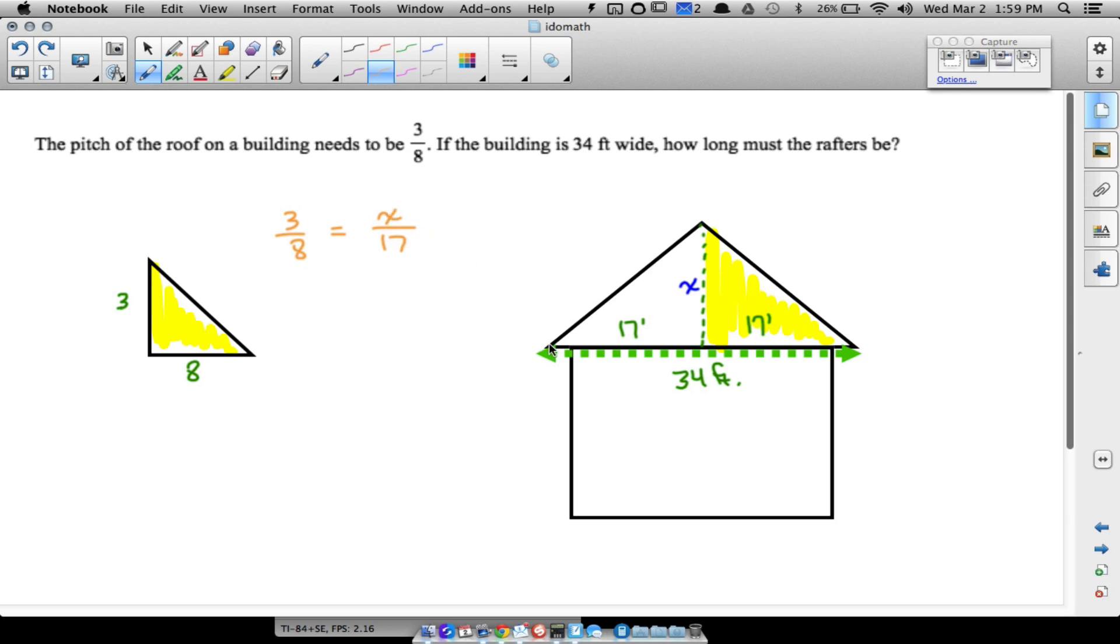Let's cross multiply and divide. So three times 17, we get 51, that's equal to 8x. Let's divide by 8.